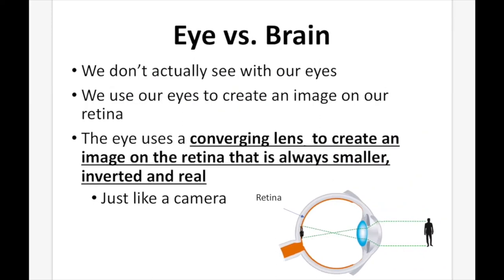Eye versus brain. We don't actually use our eyes to see — we use them to take in information and create an image on the retina. The eye uses a converging lens to create an image on the retina that is always smaller, inverted, and real, just like a camera. Light from the object enters the eye and is focused on the retina at the back of the eye, producing a smaller, inverted, real image.